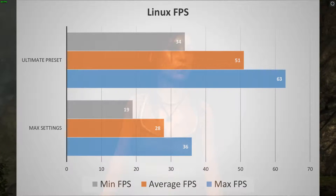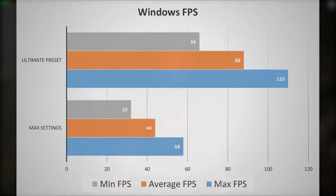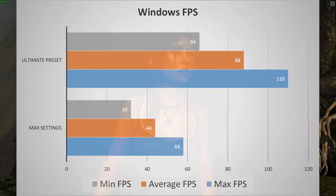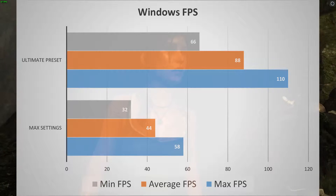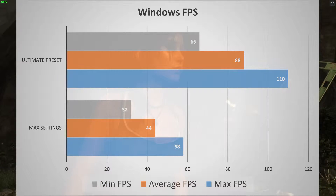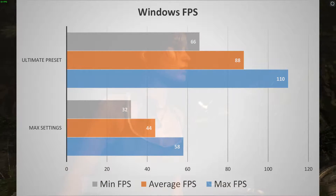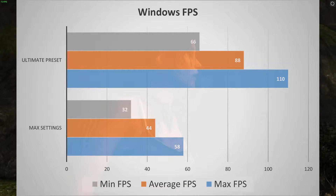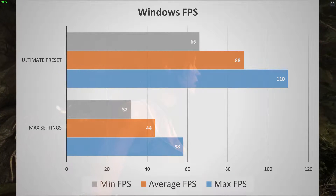Both look fine in a vacuum, but things get interesting once we compare that to the FPS we achieve on the native Windows version. On Windows using the ultimate preset we achieved 88 FPS on average, and on the maximum settings we achieved 44 FPS on average.